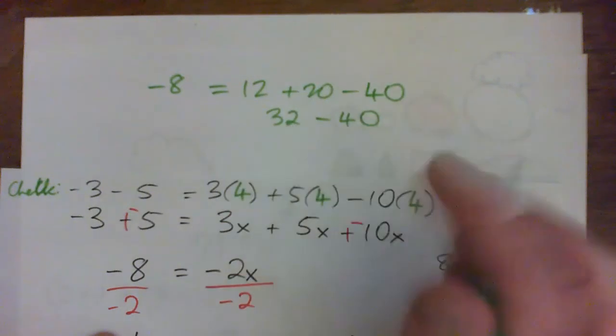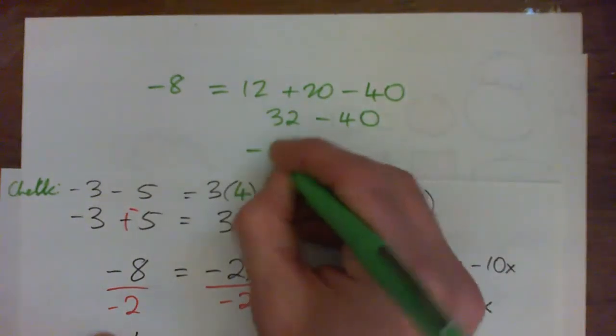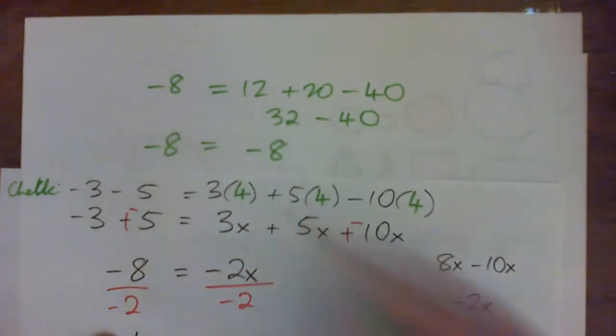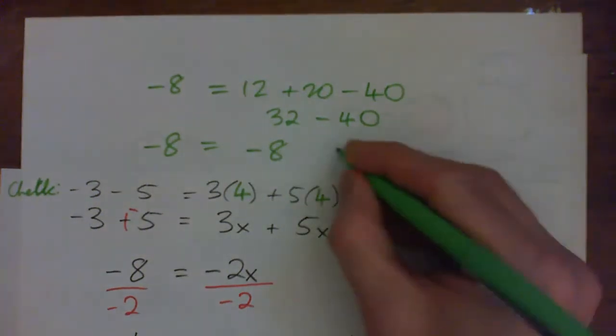$32, take away $40, I'm in debt by 8. So negative 8 on the left, negative 8 on the right, and the whole thing worked out.